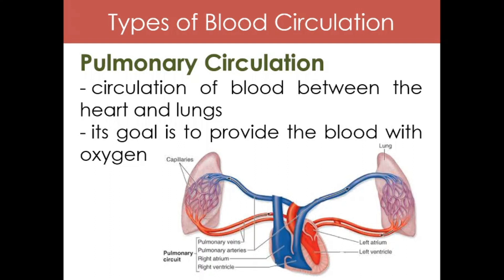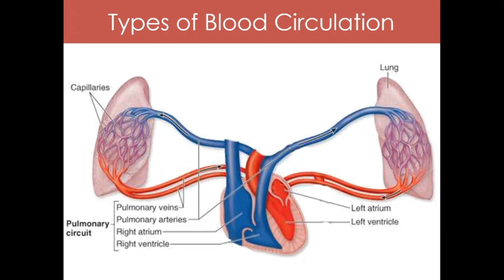Let's zoom into the picture. The heart pumps blood to every organ in our body including the lungs. The main purpose of pumping blood to the lungs is to exchange oxygen and carbon dioxide. Now, let's take a closer look at the blood vessels involved in pulmonary circulation. Notice that blood vessels colored blue carry deoxygenated blood, while those colored red carry oxygenated blood.